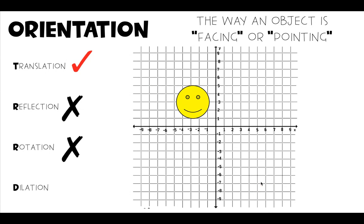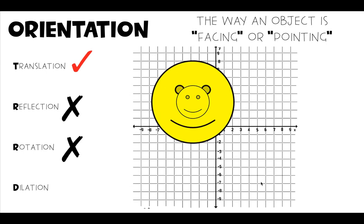And then our last transformation, a dilation. So if we make our shape bigger, did the orientation change? Is our smiley face still right side up? It sure is. So in this one, our orientation was preserved. It did not change.